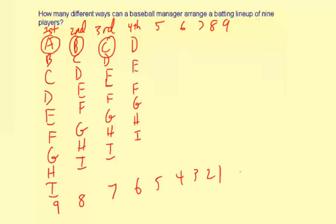And now this is just the fundamental counting principle. So what you do is you multiply these numbers: 9 times 8 times 7 times 6 times 5 all the way down to 1. And that'll tell you how many different ways the manager can arrange the lineup. And there's a shorter way to write this. It's just called 9 factorial.